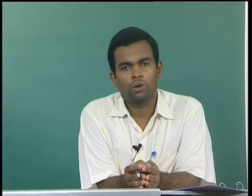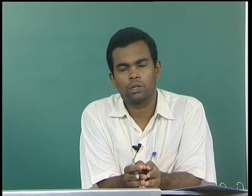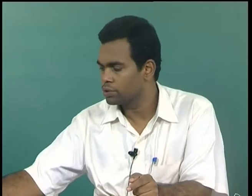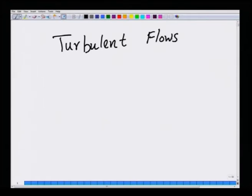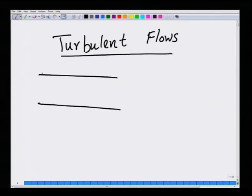Welcome to lecture number 39 on this NP 12 course on fluid mechanics for undergraduate chemical engineering students. The topic we are currently discussing is turbulent flows. In the last lecture, lecture number 38, we discussed that turbulent flows are characterized by large fluctuations about the mean. Consider flow in a pipe where z is the flow direction and r is the radial direction normal to the flow.